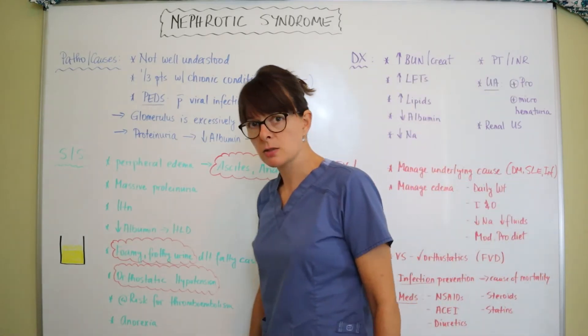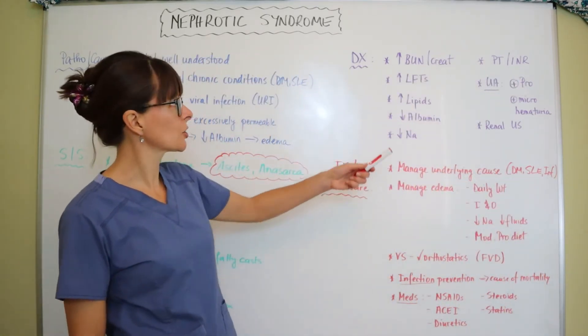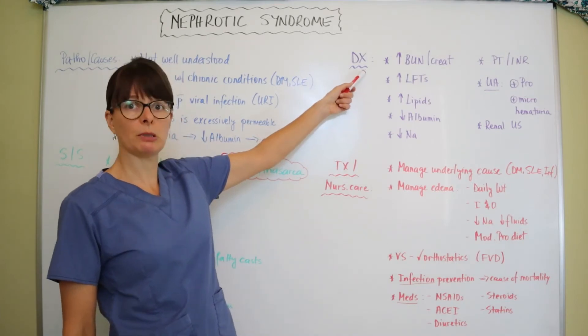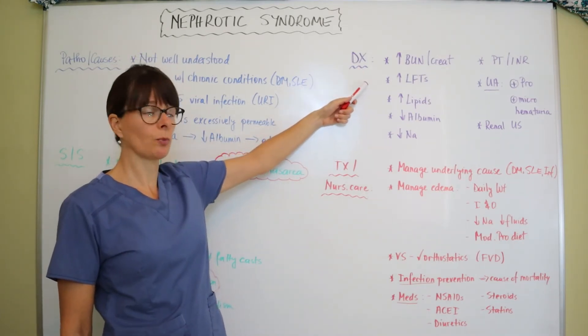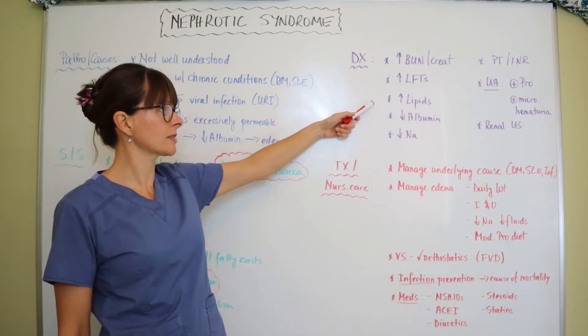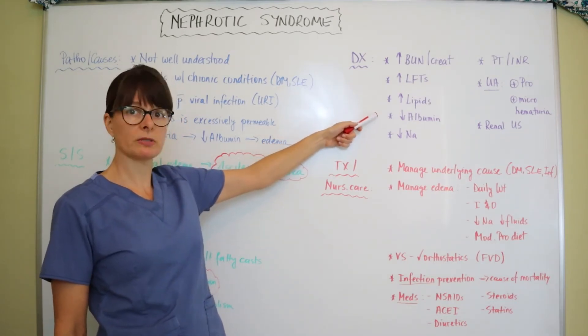For diagnostic tests, we certainly want to look at their kidney function. We'll see an increase in BUN and creatinine levels. Their liver function will be elevated, as well as their lipids. The albumin will be significantly low because it's just spilling out in the urine.